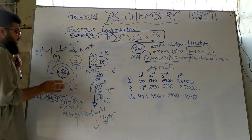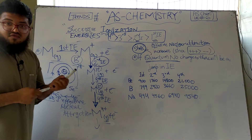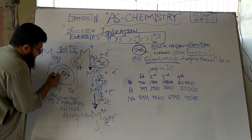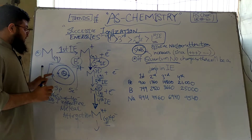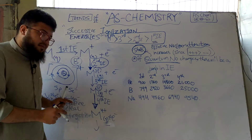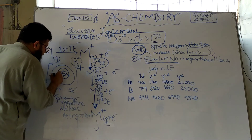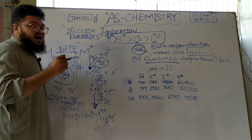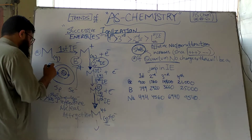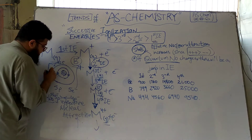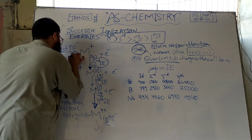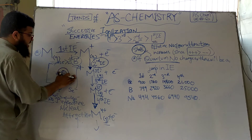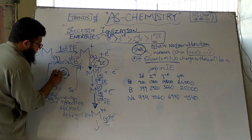After removing the second electron, I'm left with a divalent ion — the proton number stays five since protons don't change, only electrons change. Now the effective nuclear attraction on each remaining electron has become even stronger than before, so I require even greater energy to remove the next electron. The third ionization energy is therefore greater than the second ionization energy.